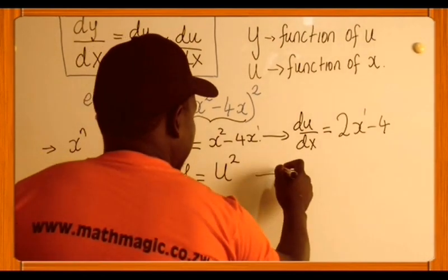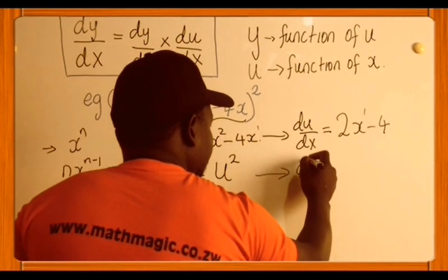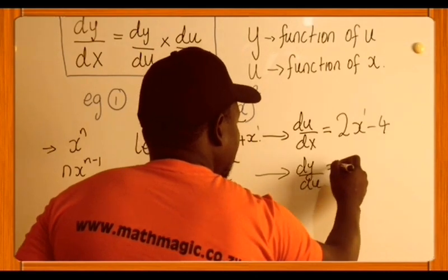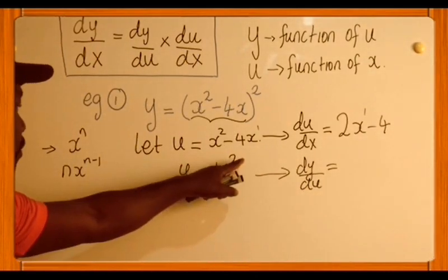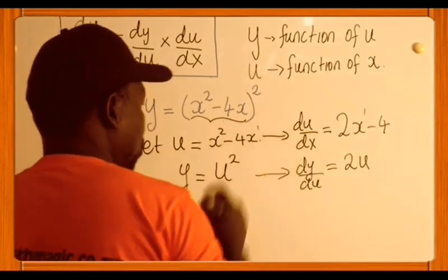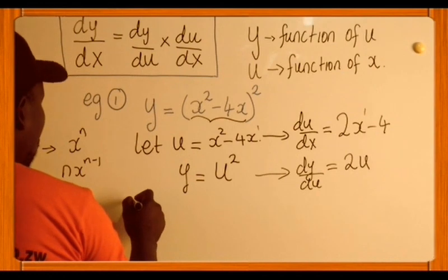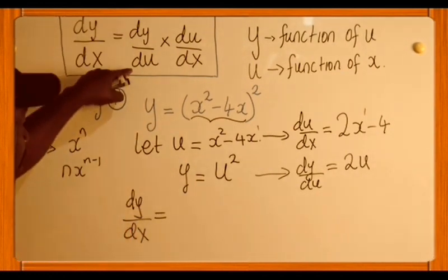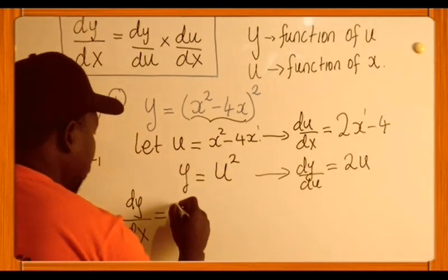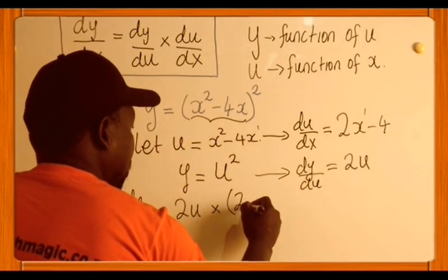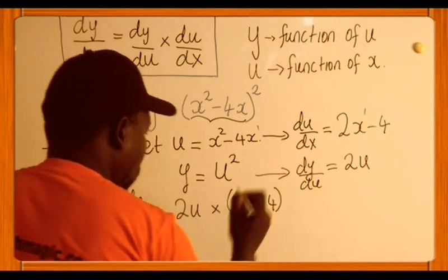From y equals u squared, we get dy/du. The 2 drops down, so it's 2u to the power of 1. Going back to our chain rule, we want dy/dx. So dy/dx is dy/du times du/dx, which is 2u times 2x minus 4.